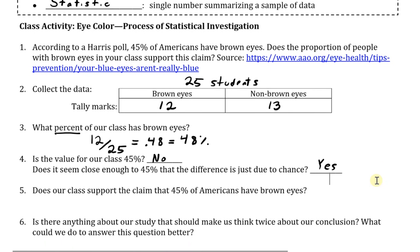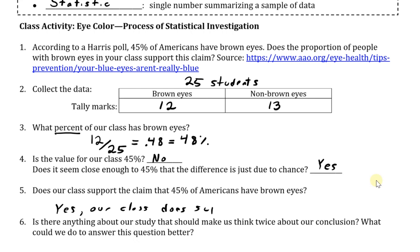Based on my information, does our class support the claim that 45% of Americans have brown eyes? I would say yes, our class does support the claim. In context, the value that we have of 48% is pretty close to 45%, so it does seem that we are supporting the original statement provided.